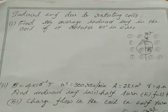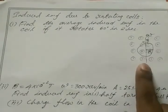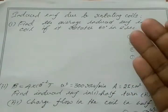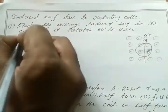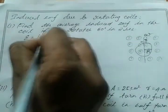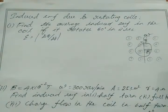Now we will solve some numericals based on rotating coils. The first problem: find the average induced EMF in the coil if it rotates 60 degrees in two seconds. The given data are theta (angle of rotation) and time t = 2 seconds. Using the formula for average induced EMF: EMF = delta(phi) / delta(t). We only consider magnitude here, so we drop the negative sign.